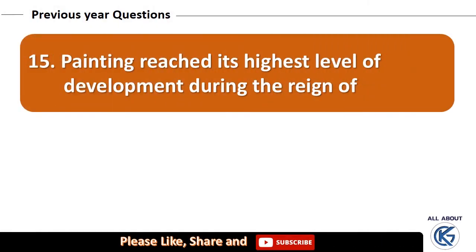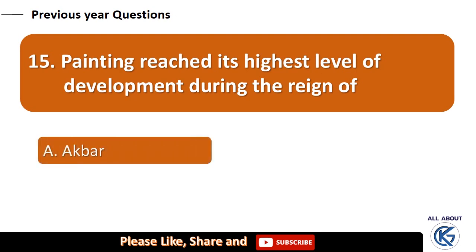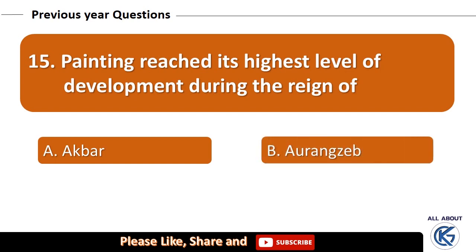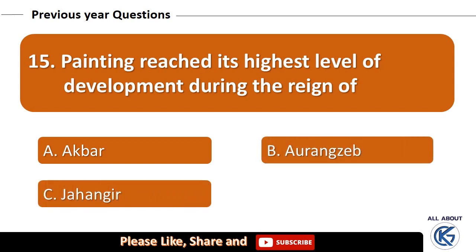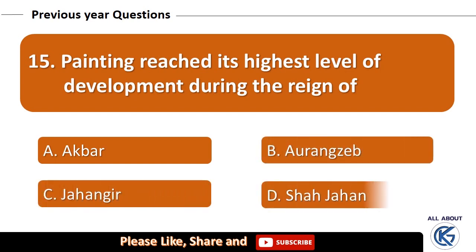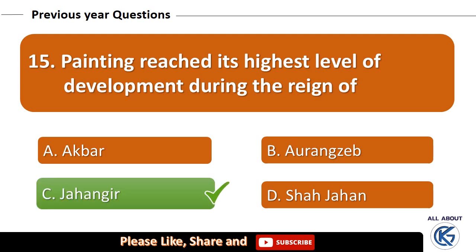Painting reached its highest level of development during the reign of: Akbar, Aurangzeb, Jahangir, or Shah Jahan? The right answer is Jahangir.